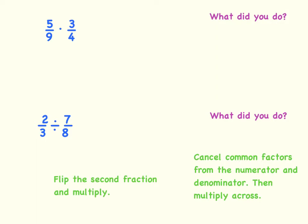First, let's look at multiplying fractions. I have 5 ninths times 3 fourths. If I want to multiply these two together, I actually have two ways I could go about doing this. The first way is I could just start out by multiplying numerator times numerator, which would be 15, and denominator times denominator, which would be 36.